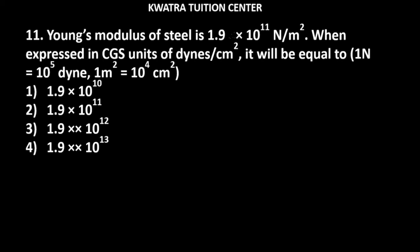Let's start with question number 11. Young's modulus of steel is 1.9 × 10^11 N/m². This is Y, which is 1.9 × 10^11 newton over meter square. When expressed in CGS units of dynes over centimeter square, it will be equal to what?